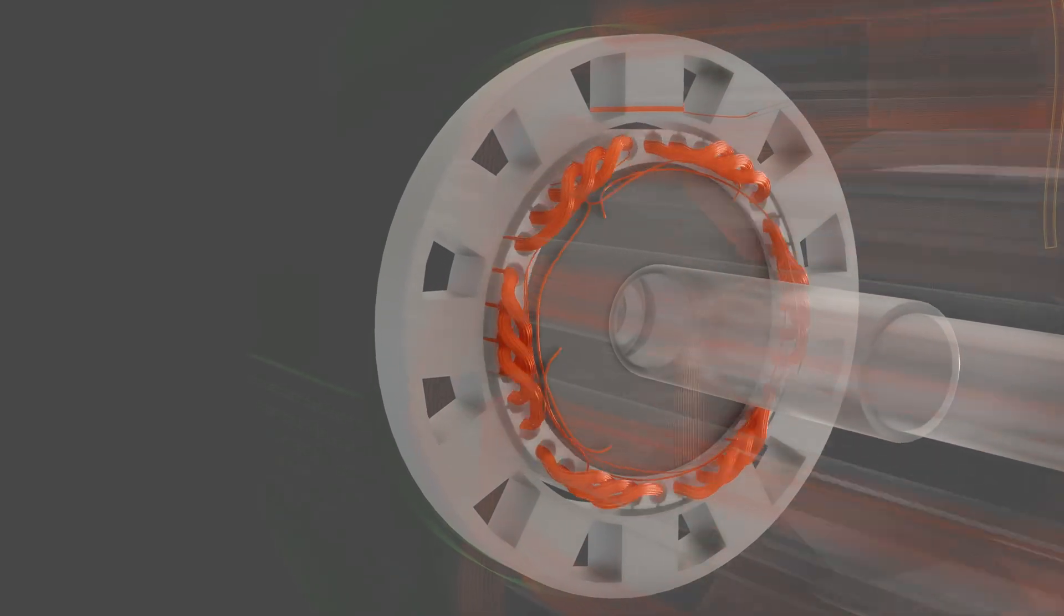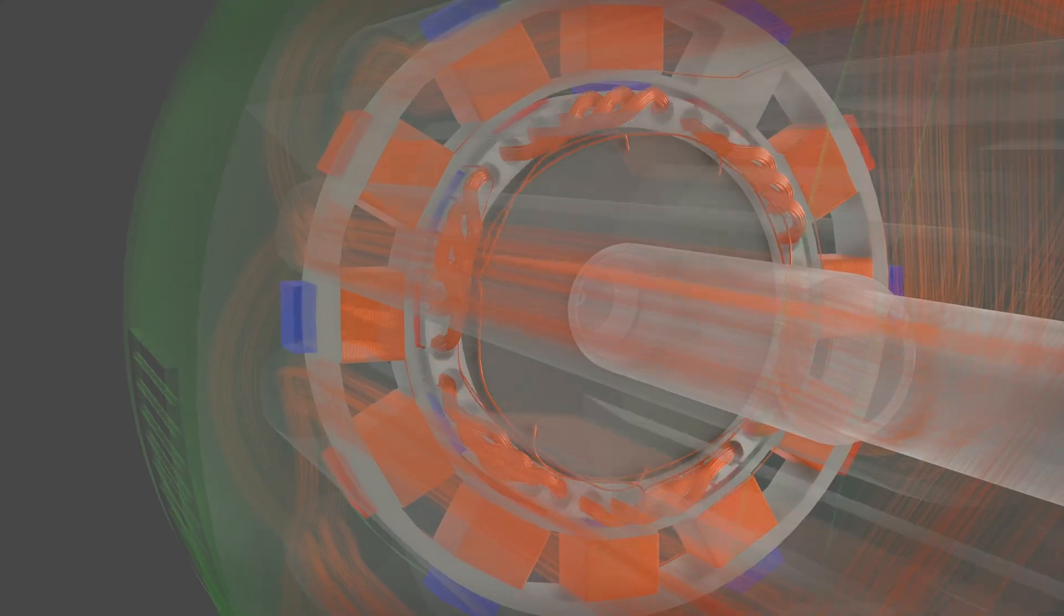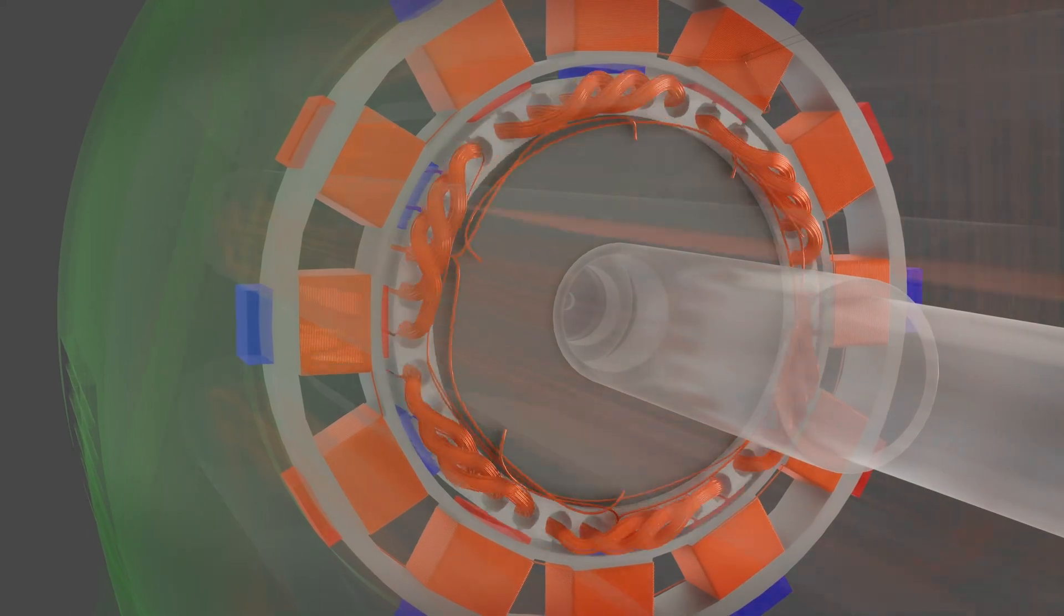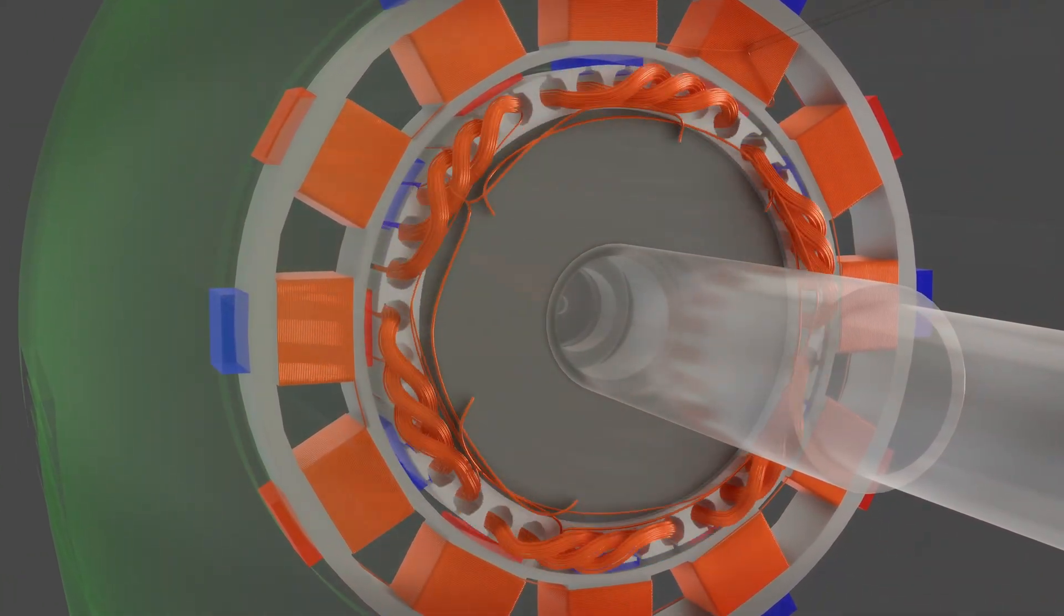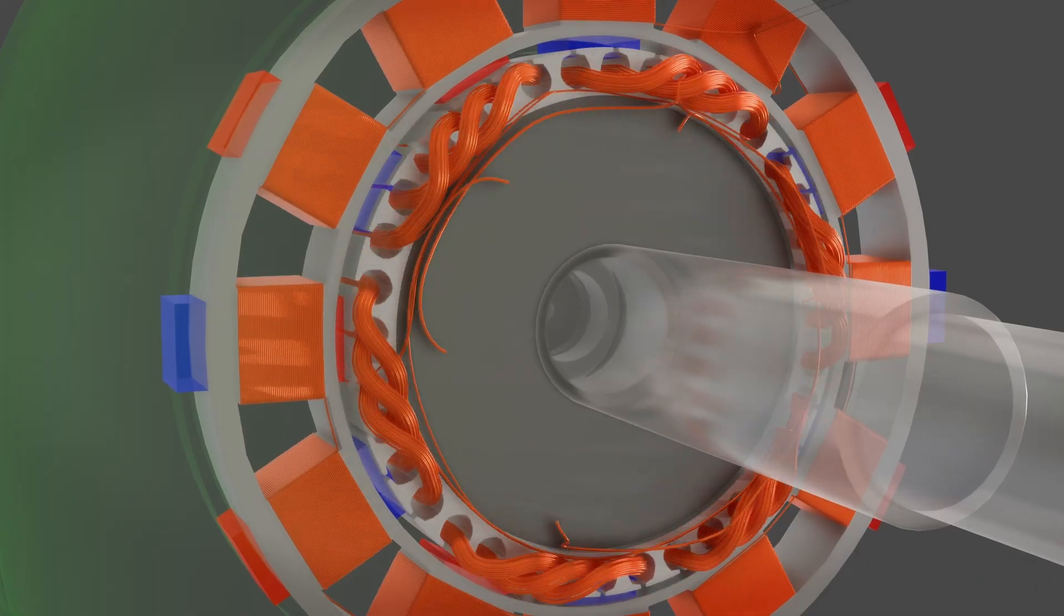The exciter stator winding is done similar to the main alternator rotor, where coils are wound in alternating clockwise and counterclockwise directions to create alternating magnetic poles. The exciter rotor coil winding is done similar to the main alternator stator, where three coils are positioned 120 degrees apart.